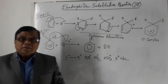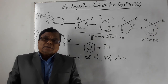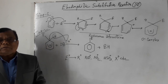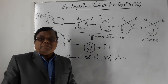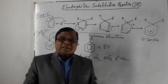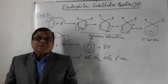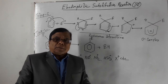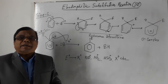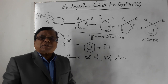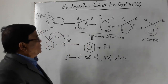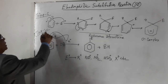Dear students, today I shall discuss electrophilic substitution, which is denoted as SE. In an electrophilic substitution reaction, the attacking group is an electrophilic reagent. This reaction is called electrophilic substitution reaction and is denoted by SE. This reaction happens in two steps; step one is a fast reaction involving benzene.